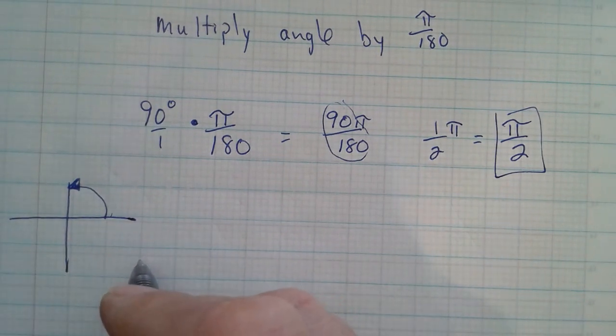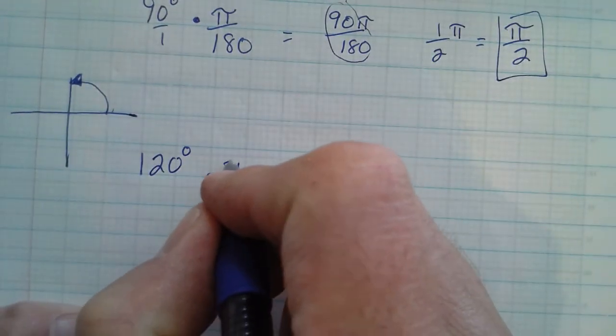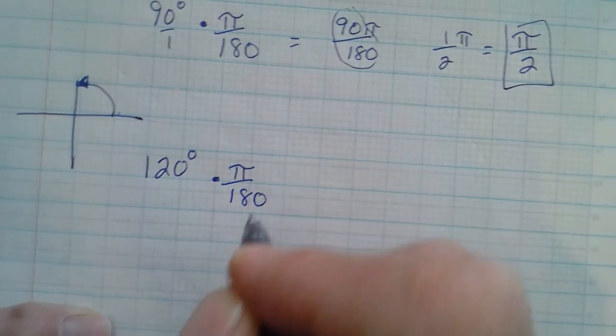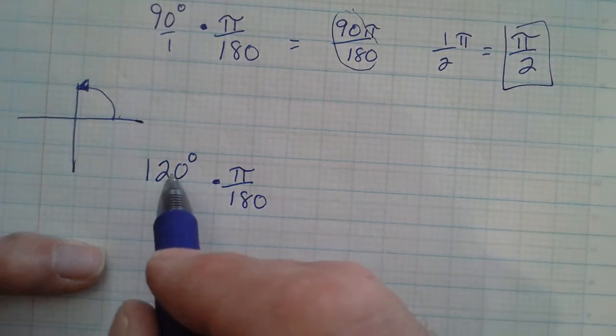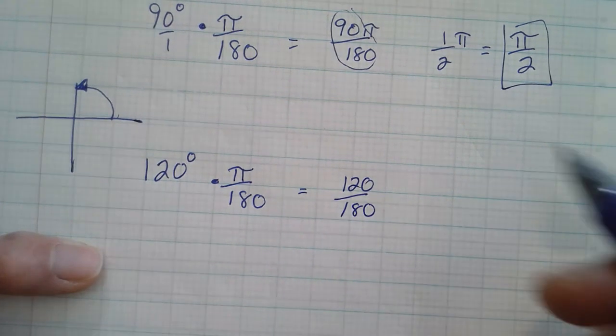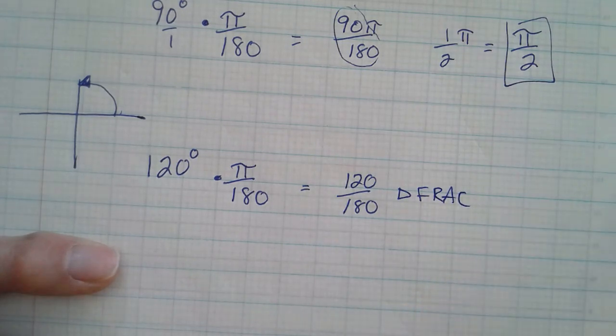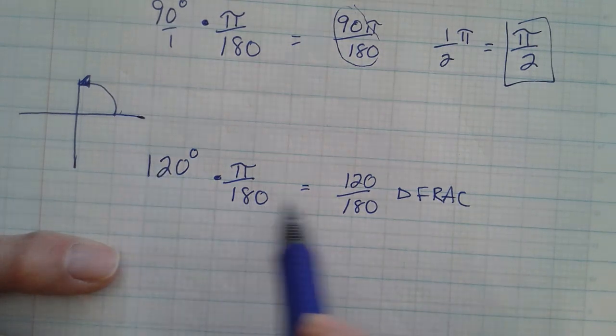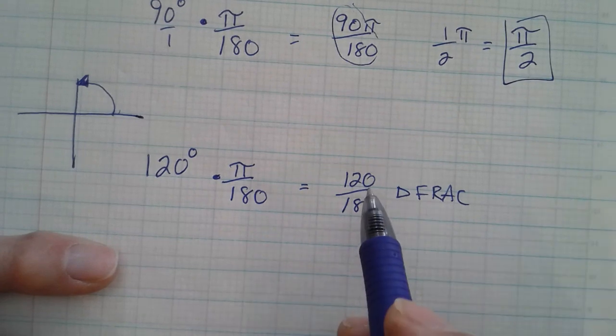All right, so how about 120 degrees? See if we can convert that to radians. So again, we multiply by π over 180. And here's where you can grab your calculator. So graphing calculator, you can multiply. We could just figure out 120 as a fraction, 120 over 180. So type that into your calculator, and then hit the frac button. So it's math, enter, enter, and it'll change it to a fraction for you. So if you don't want to do it by hand, just do this, math, enter, enter, and go frac, and it'll become two-thirds.